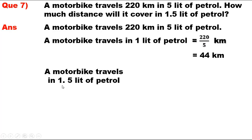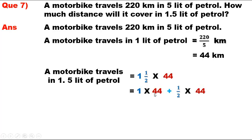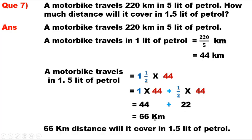Distance covered in 1.5 litres of petrol = 1.5 x 44 = 44 + 22 = 66 km. Therefore, 66 km distance will it cover in 1.5 litres of petrol.